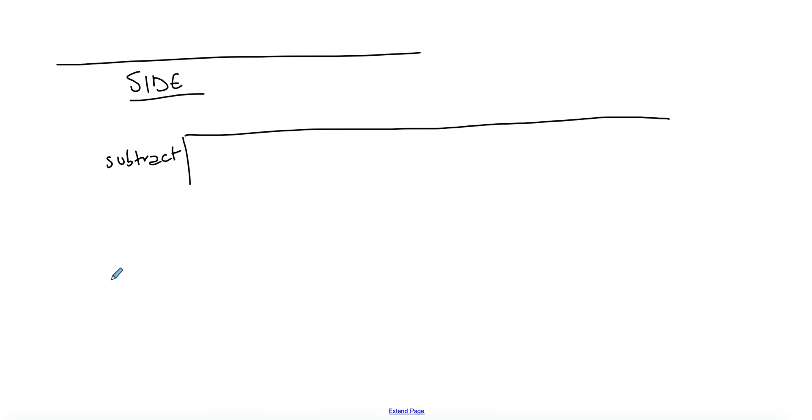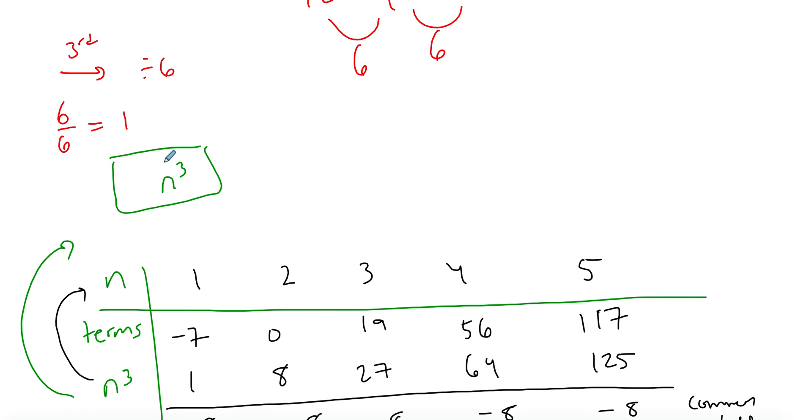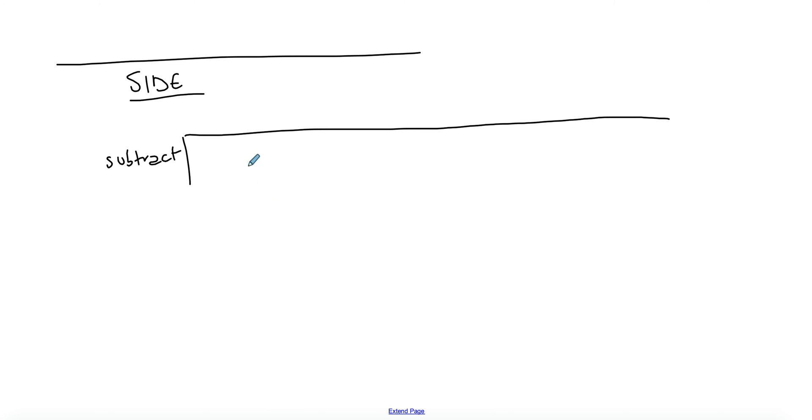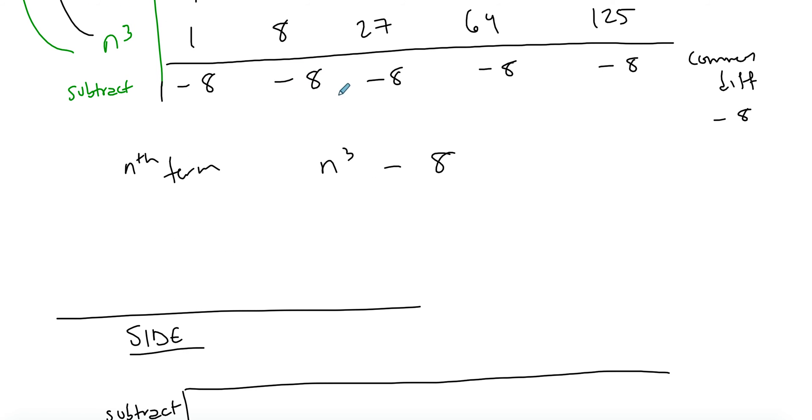This is a side note. If the common difference, the subtraction, whatever you get here is whatever you're going to add on top of or in front of your n³. If it was a linear sequence or a constant common difference, then you're just going to add this common difference.